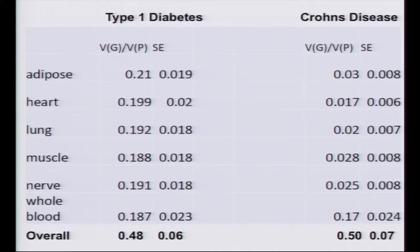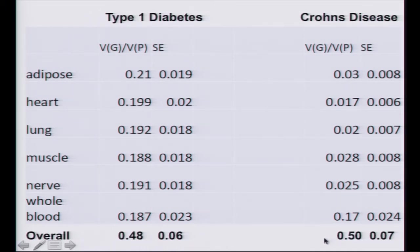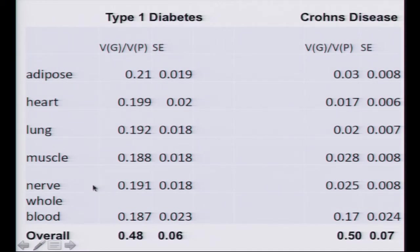Within GTEx, people have used creative ways to look at how regulatory variation concentrates heritability. This is the heritability with GCTA for type 1 diabetes using all SNPs interrogated in the Wellcome Trust Case Control Consortium GWAS. You see about 48% heritability for type 1, about 50% for Crohn's disease, but concentrated with just the few thousand SNPs characterized as eQTLs in adipose. You see almost 40% of that heritability in just a few thousand SNPs that are eQTLs in adipose, heart, lung, or muscle.